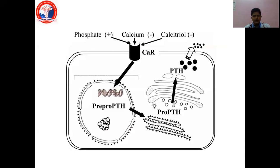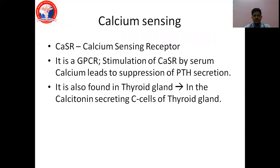When calcium is decreased in the blood, it activates a receptor which causes mRNA transcription and ultimately exocytosis of parathyroid hormone. This receptor is called CASR — the calcium sensing receptor — and it is a G-protein coupled receptor. Stimulation of CASR by serum calcium leads to suppression of parathyroid hormone secretion. CASR is also found in the calcitonin-secreting C cells of the thyroid gland, and in the kidneys, where in all locations its function is to sense calcium and provide feedback.